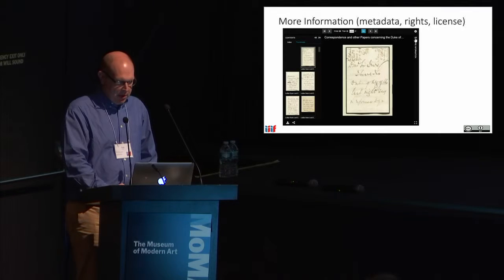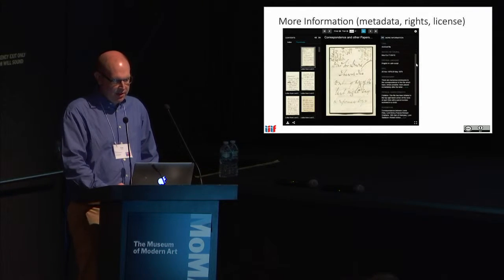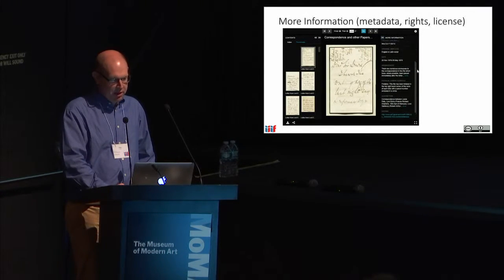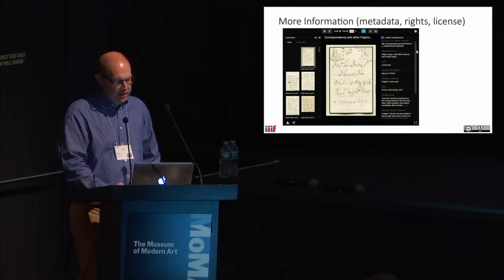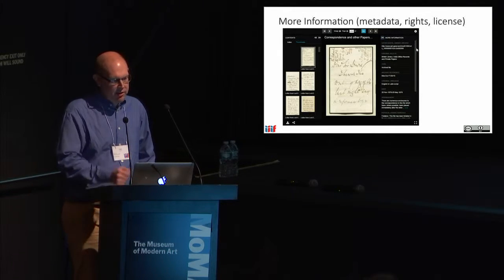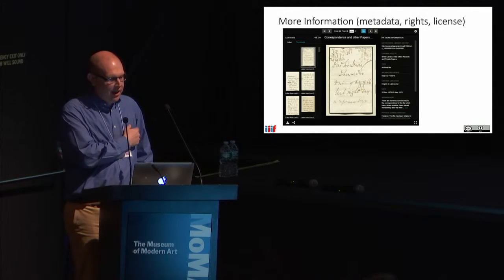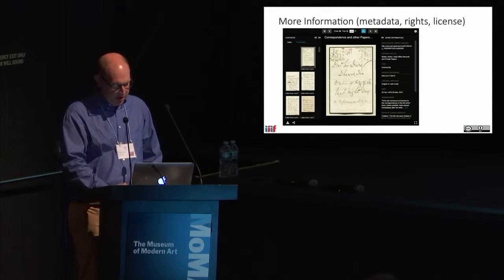The more information panel on the right-hand side conveys the rights and licensing information and the other bits of metadata that the manifest contains. The configuration of the Universal Viewer allows you to control how that is displayed with various configuration settings.